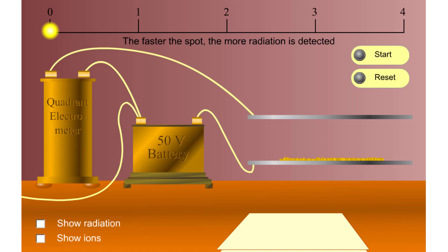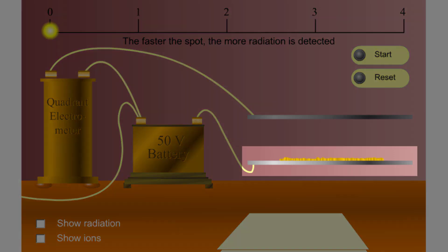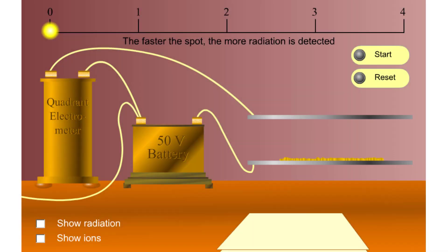In 1899, Rutherford was experimenting with how easily the radiation from powdered uranium went through very thin sheets of metal foil.